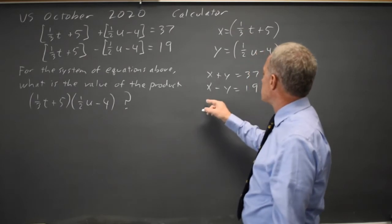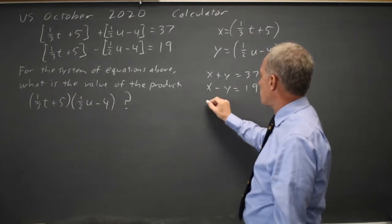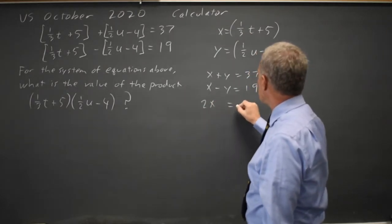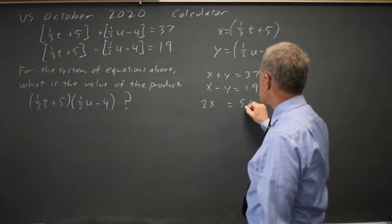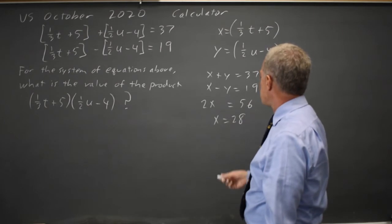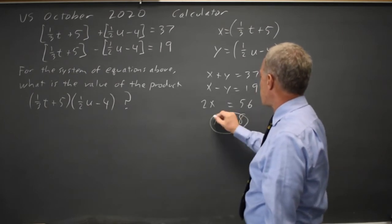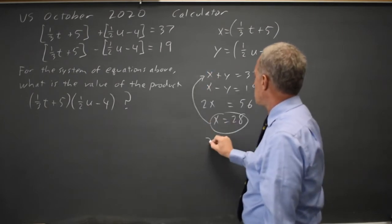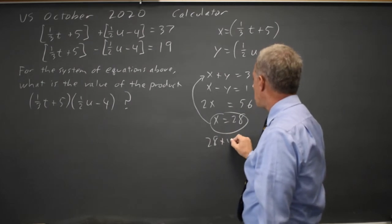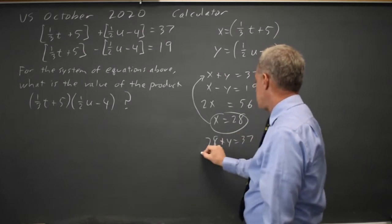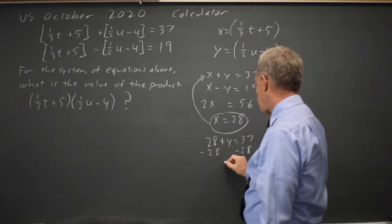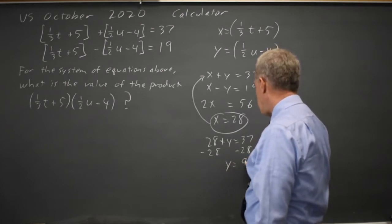If I add these two systems together, that will eliminate the variable y, giving me 2x equals 56. So x equals 28. And if x equals 28, I can put that back into either equation. 28 plus y equals 37, subtract 28 from both sides, and y equals 9.